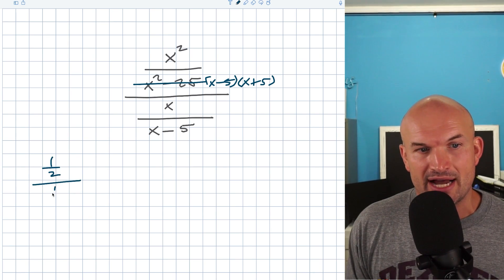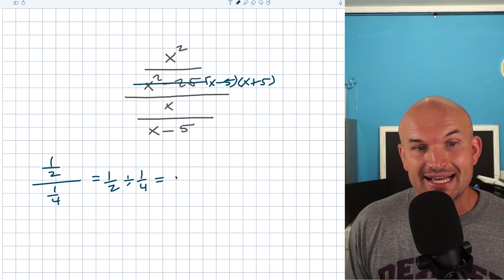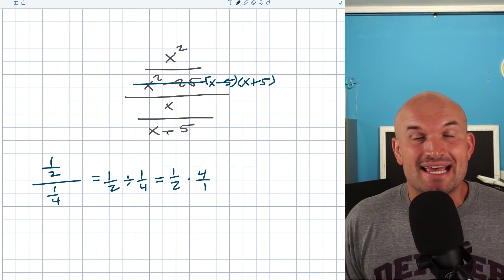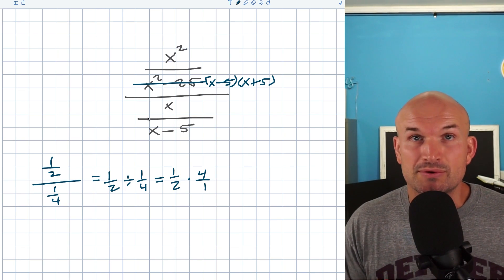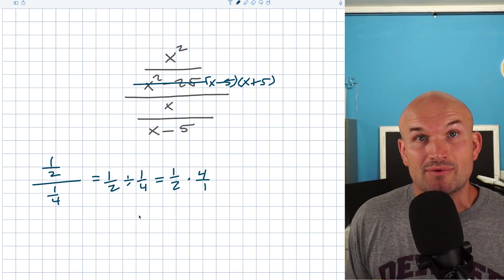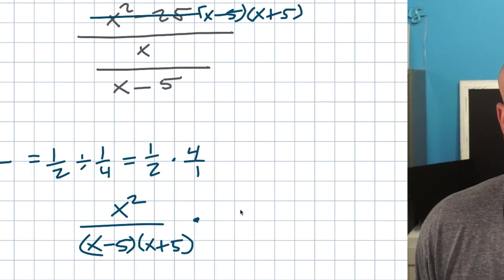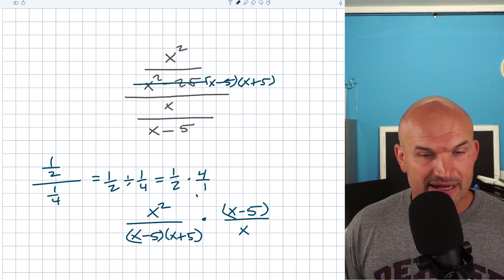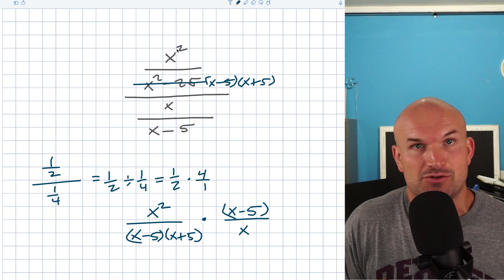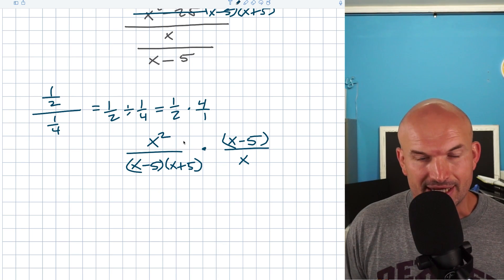A key mistake that students will make at this point is they'll just start dividing things out because they recognize, oh, I have an x here and an x here, or an x minus five here and an x minus five here, and they try to divide them out. I don't want you to do that. Whenever you have fraction divided by fraction, we can simply rewrite that as a multiplication problem. For instance, one half divided by one fourth is the same thing as one half times four over one — multiplying by the reciprocal of your denominator. So therefore I'm just going to rewrite it now as a multiplication problem — just make sure you use the factored form.